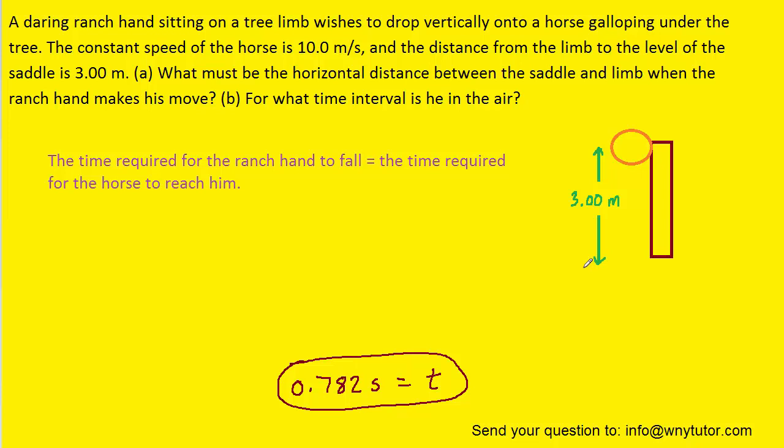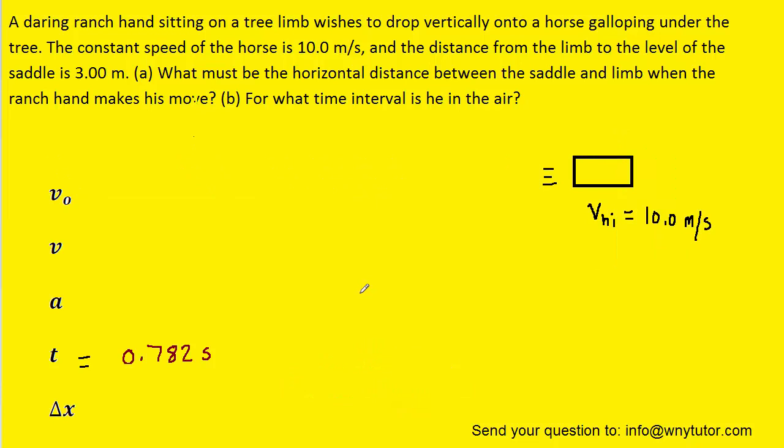So we're going to set up another table. This time we'll set it up for the horse not the ranch hand. And we'll carry over the 0.782 seconds that we just calculated. So here we've set up the chart just like we did for the ranch hand. But this time for the horse we've drawn the horse over here. Though that picture might not be terribly helpful for part a. We note from that picture that the initial velocity of the horse is 10 meters per second. So we can fill that into the table.